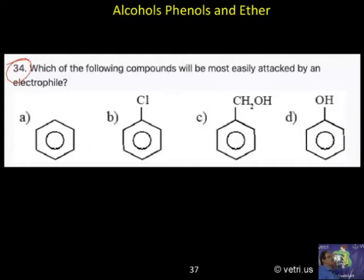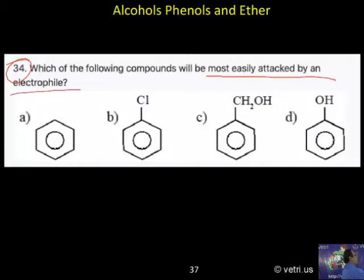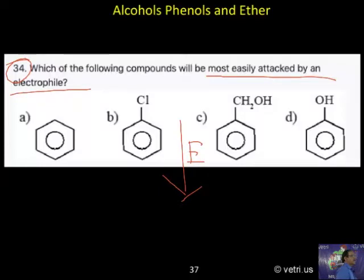Which of the following compounds will be most easily attacked by an electrophile? Electrophile means it will attack — for example, nitration, sulfonation, halogenation, anything. Let us say nitration. Which will undergo nitration most easily?